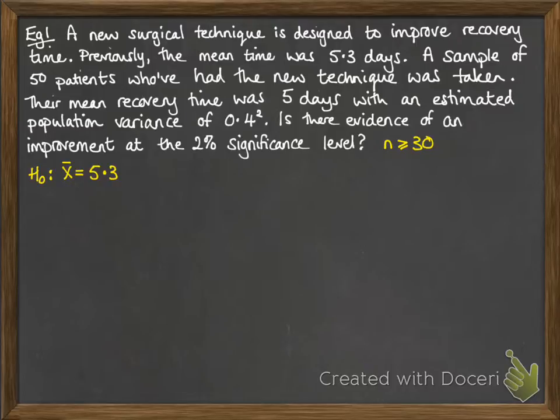Our null hypothesis is that the mean is 5.3, that there hasn't been any difference. Our alternative hypothesis is that the mean is less than 5.3, that means there would be an improvement, that the recovery time has got less.